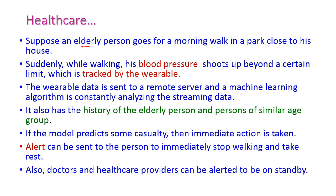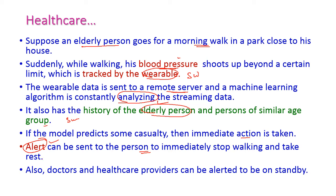For example, an elderly person goes for a morning walk and their blood pressure increases — this is tracked by a wearable such as a smartwatch. That data goes to a remote server where a machine learning algorithm constantly analyzes it. Based on the history of the elderly person and similar age-group data, an alert message is sent to the person asking them to rest, and the same alert goes to the doctor or healthcare providers to take necessary action immediately to save that person's life.